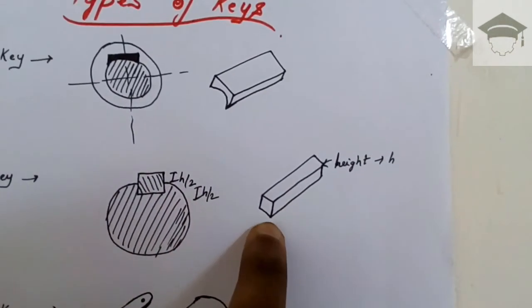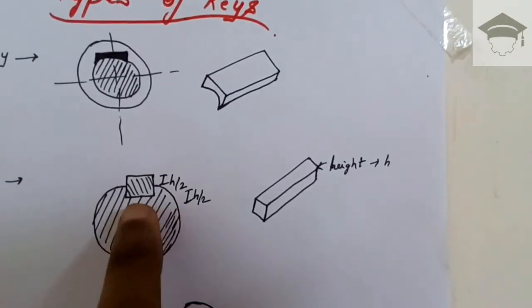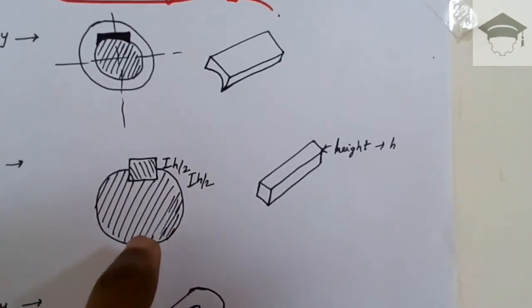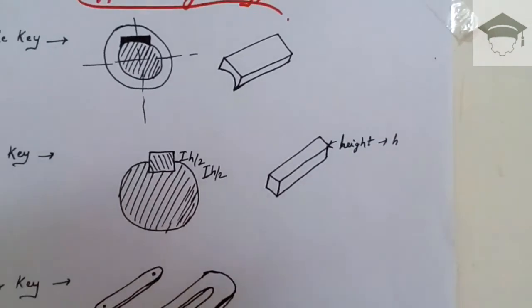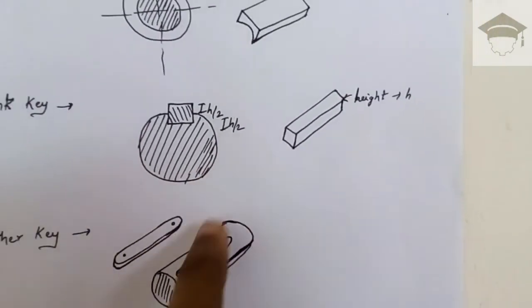Feather key is of this shape, and the slot is made in the shaft itself. This key is inserted in the shaft.